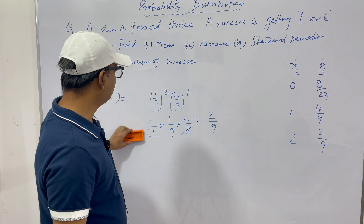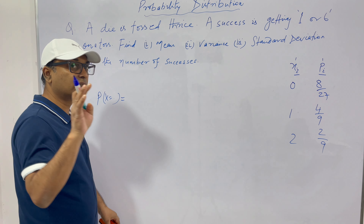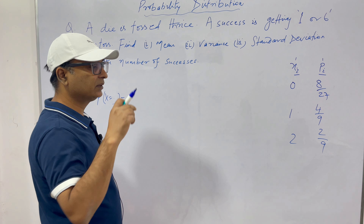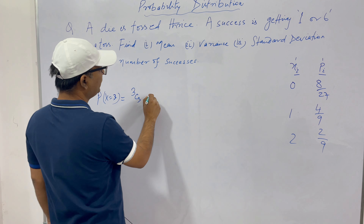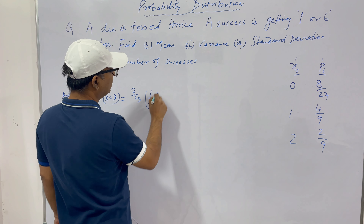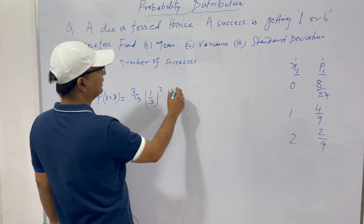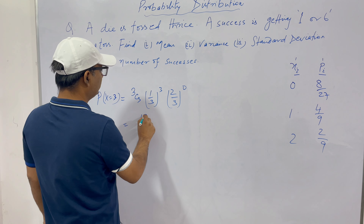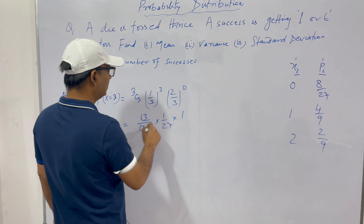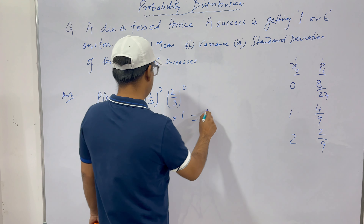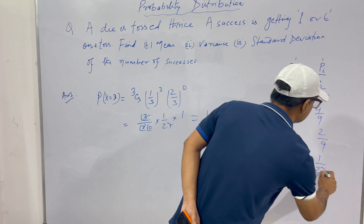For X = 3 — that is, we get one or six every time we throw the die for all three tosses. P(X = 3) = 3C3 × (1/3)^3 × (2/3)^0. 3C3 = 3!/3!0! = 1, (1/3)^3 = 1/27, and (2/3)^0 = 1. So the probability is 1/27. For X = 3 it is 1/27.